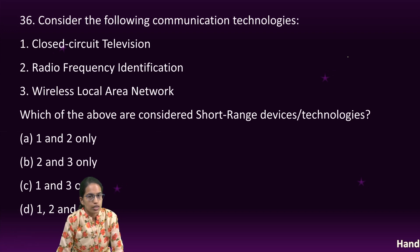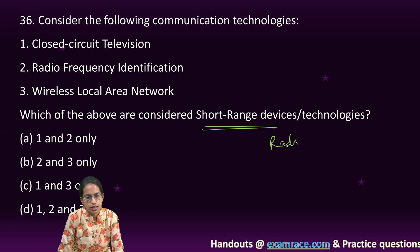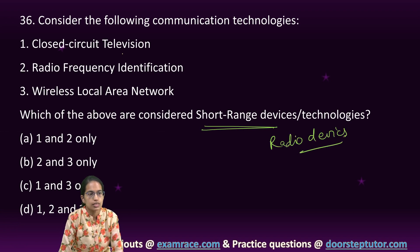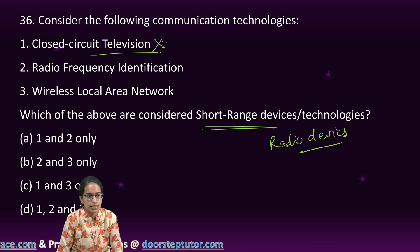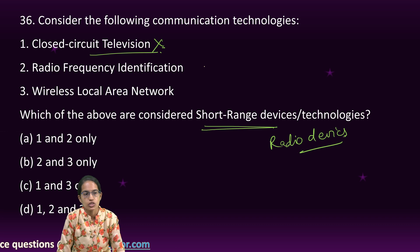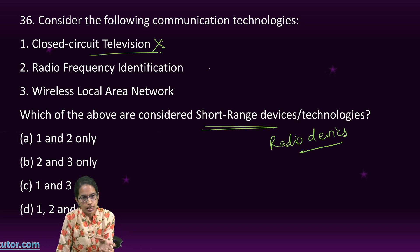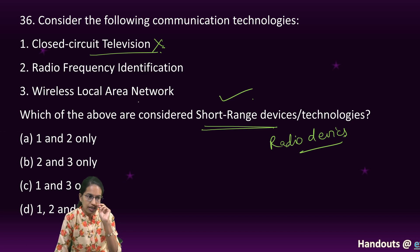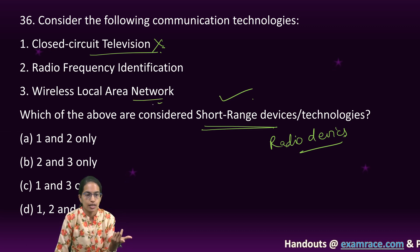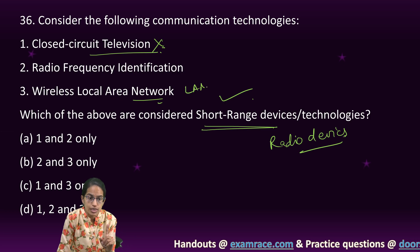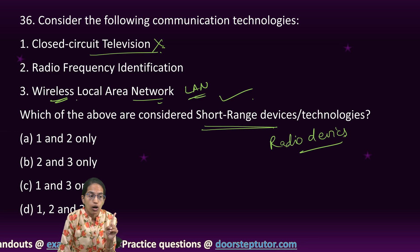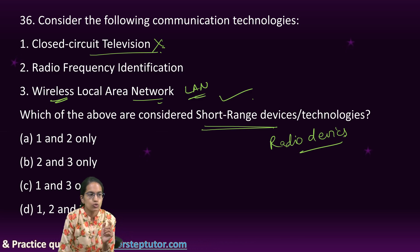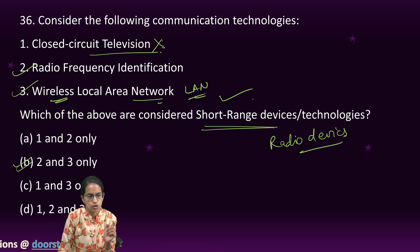The next question is on communication technology and short range devices. Short range devices are radio devices. CCTV is a wired device, not a radio device, so option one is incorrect. RFID (Radio Frequency Identification) is very low range, making it definitely a short range device. Wireless LAN covers a limited region. So two and three are the correct options.